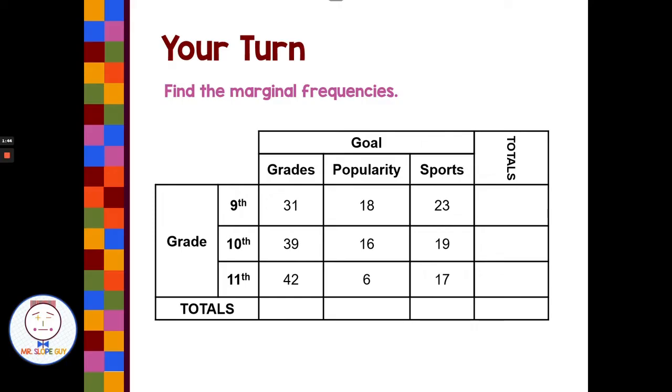All right, welcome back. So if we added up grades, we would get 112. We add up our column for popularity, 40. Our column for sports, we have 59. And then we're going to add across our rows.